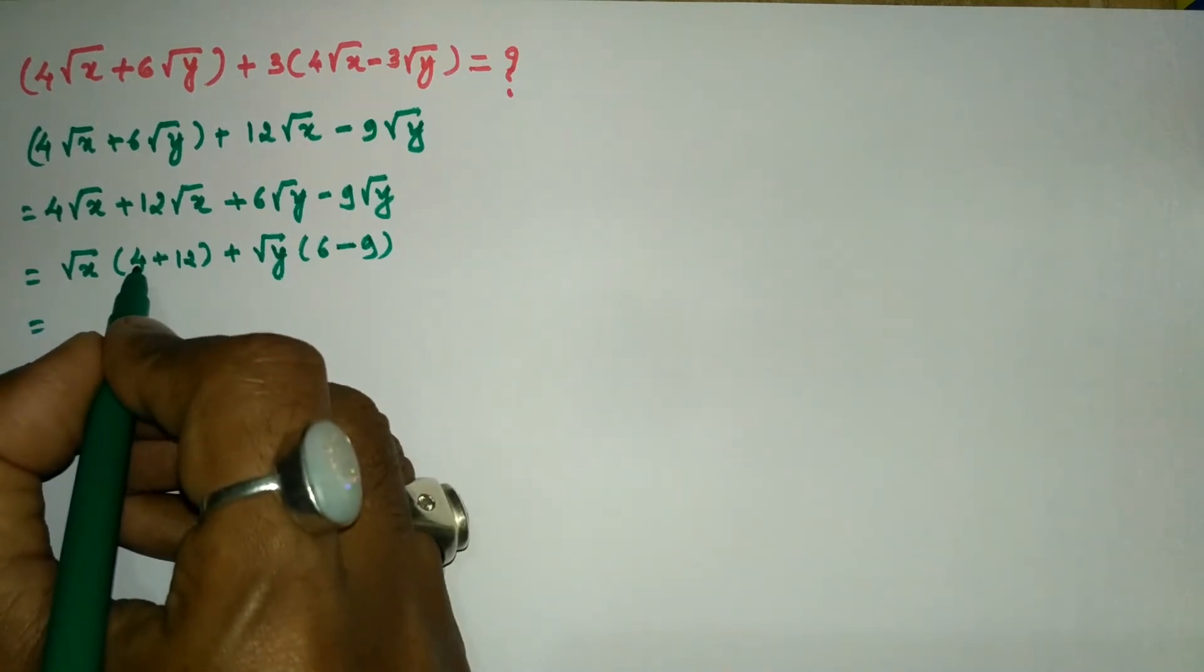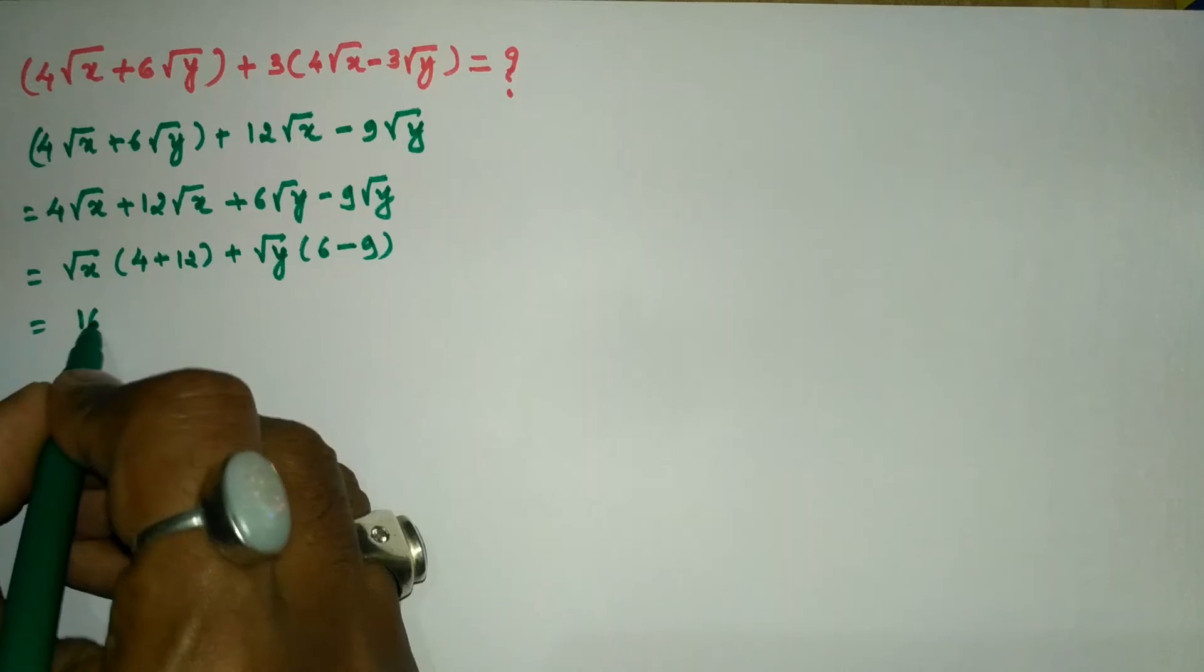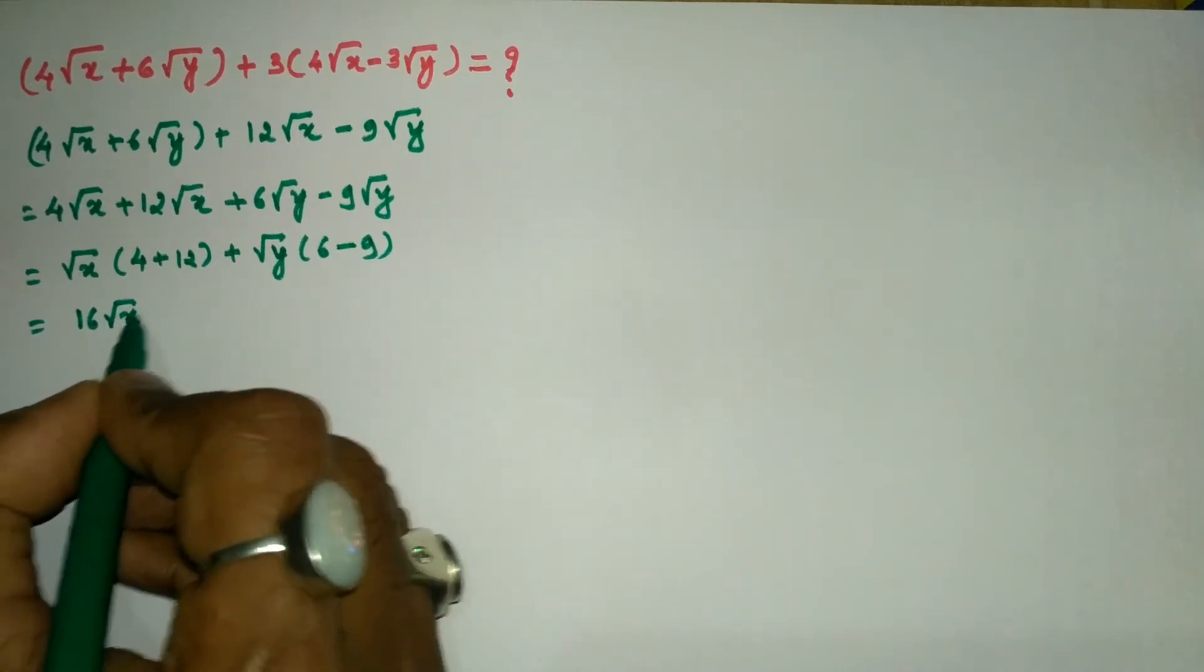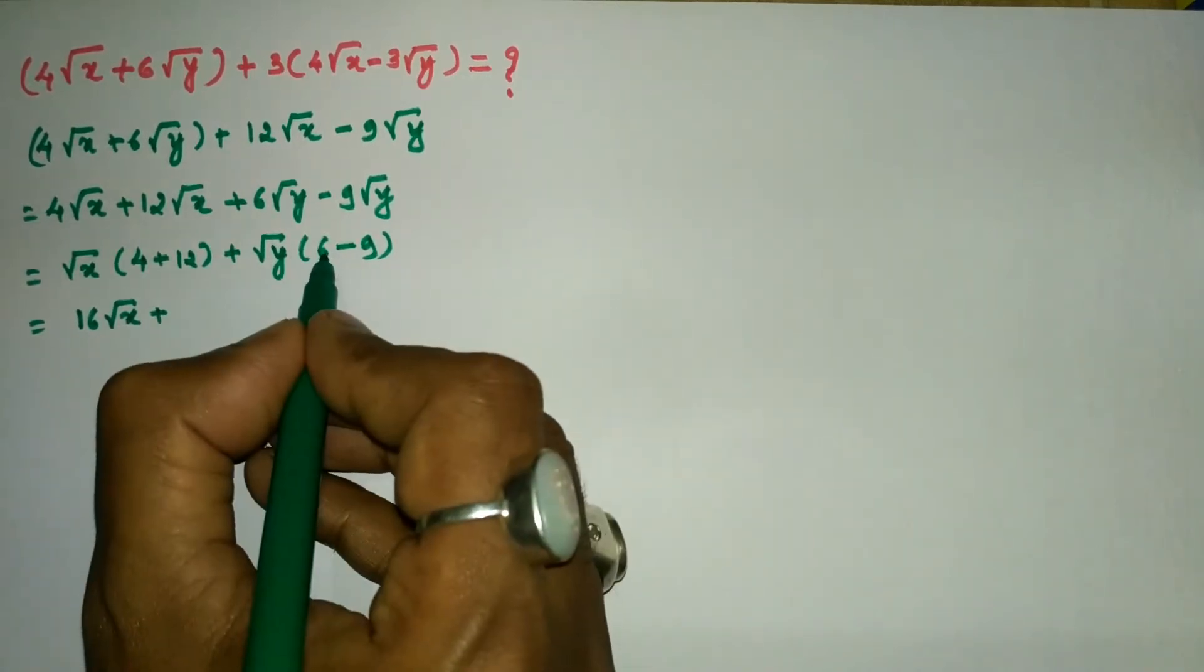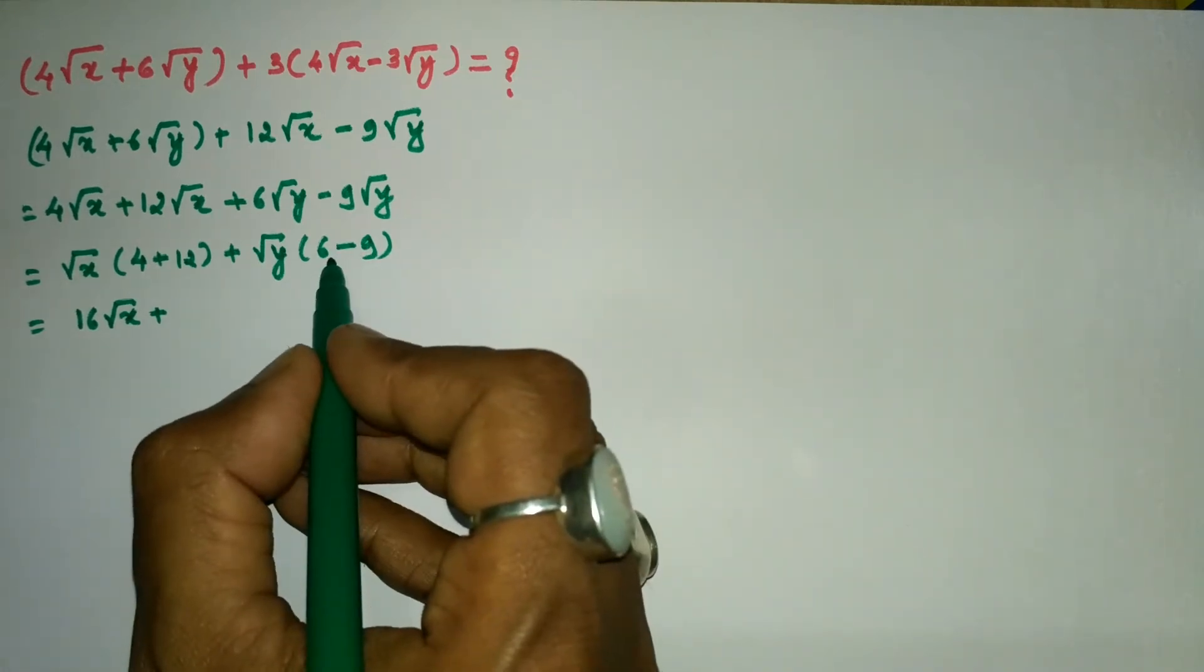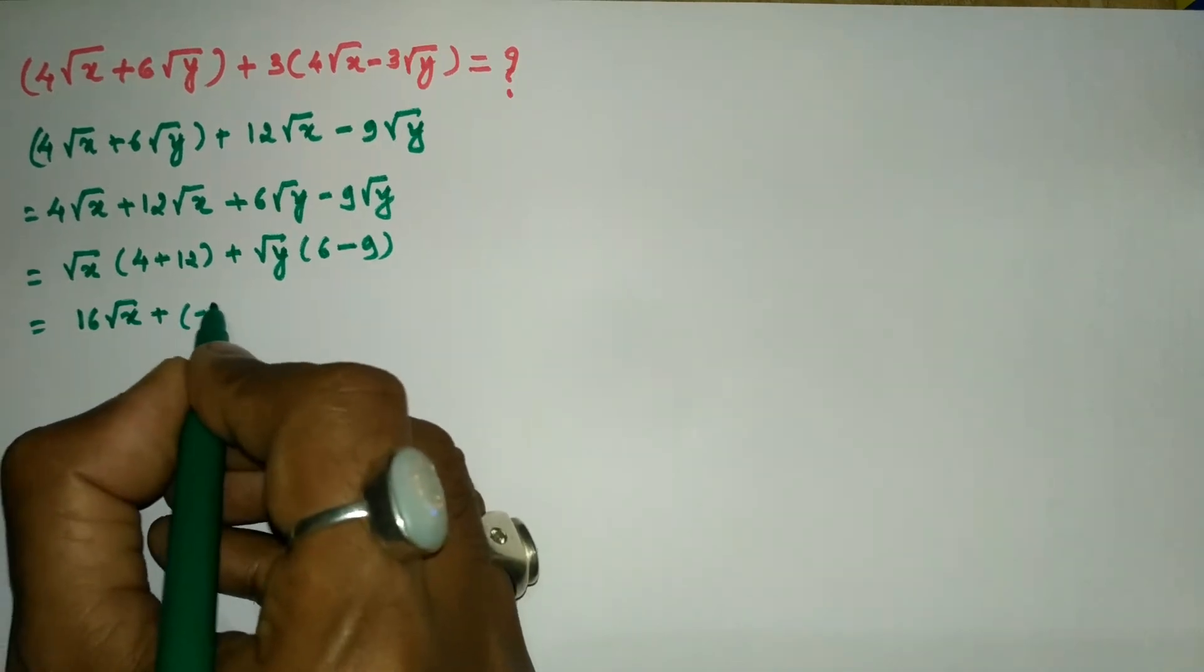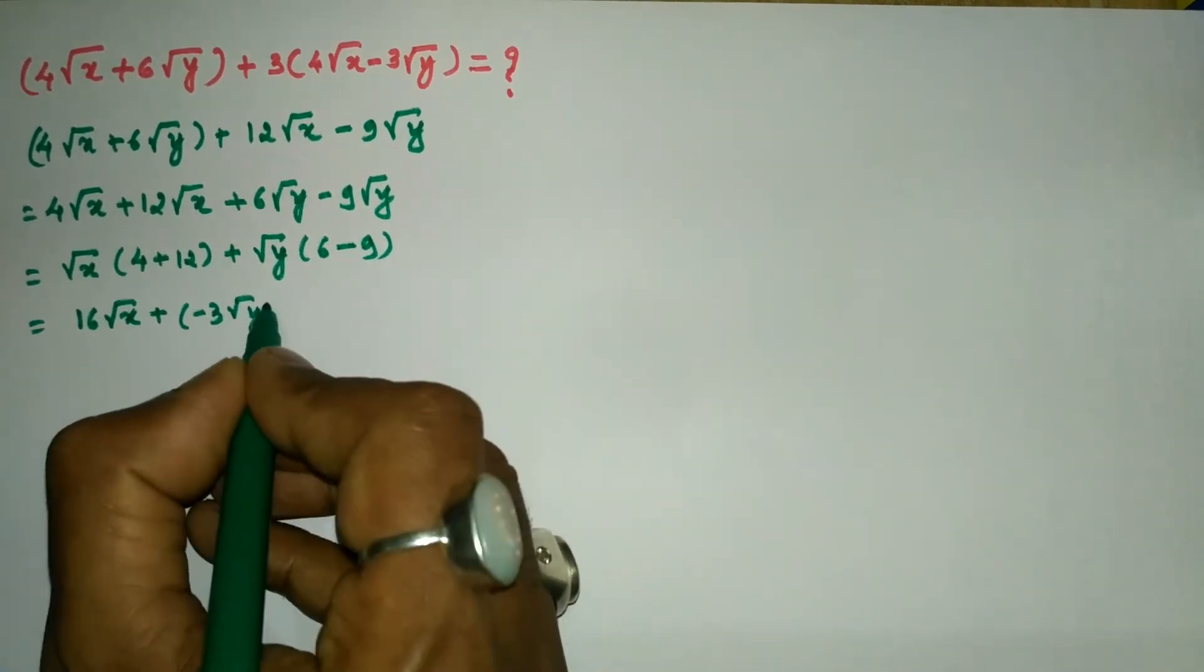Further, we will simplify: 4 + 12 = 16. So I will write 16√x, and 6 - 9 = -3. So I am going to write -3√y.